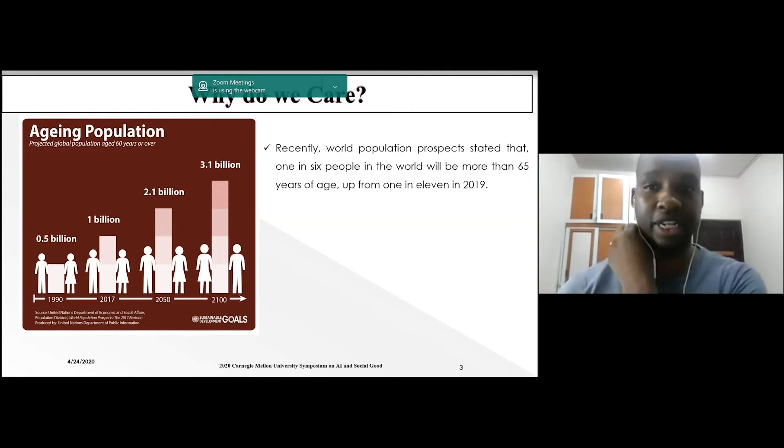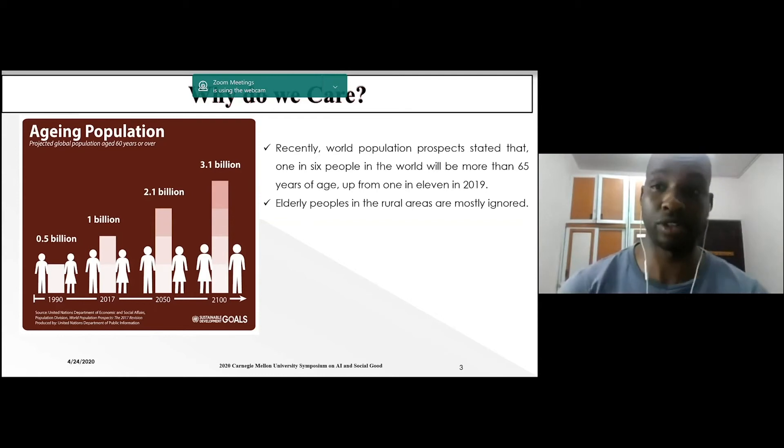Recently, the world's population projects predicted that one in six people will be 60 years of age and above. Elderly people in rural areas are majorly not considered or mostly ignored. Most datasets that are publicly available are collected from elderly people in island cities. Aside from that, collecting data from elderly people in rural areas is very difficult because most of them cannot understand you, like you're trying to attach something horrible to them.